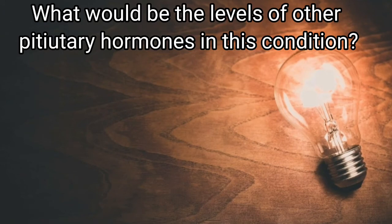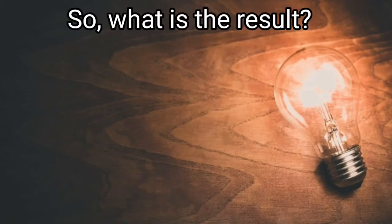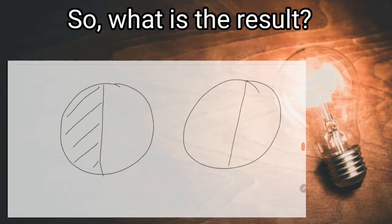What is the most important surrounding structure affected? Optic chiasma. So what is the result? Bitemporal hemianopia.